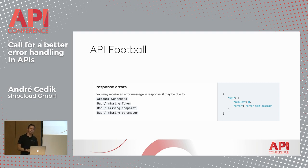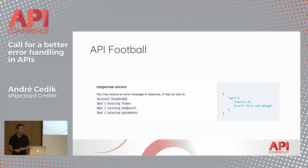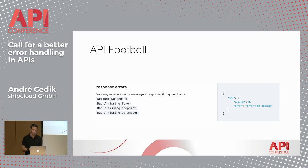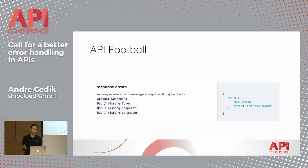One particularly interesting example is the API-Football API. Responses are encapsulated in the API root attribute. Since all calls are GET requests to query for info, the response always has a "results" attribute which can be zero, and errors are returned through the "error" attribute. Unfortunately, their documentation doesn't go into details or show more examples, so it seems they're only able to handle a single error.